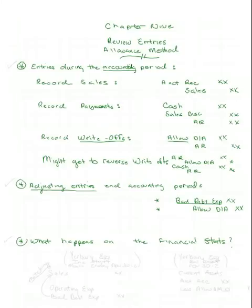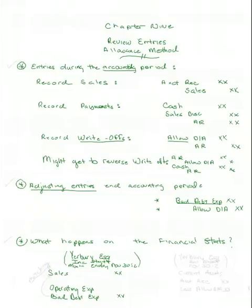Let's move on now to see what happens on the financial statements as a result of the above entry. On the income statement — notice I'm reminding you of good headings: name, income statement for the period covered — you will show sales and you will show the estimate of bad debt expense in the same period, thereby matching the expense in the period that the revenue was recognized. Excellent matching under the allowance method of accounting.